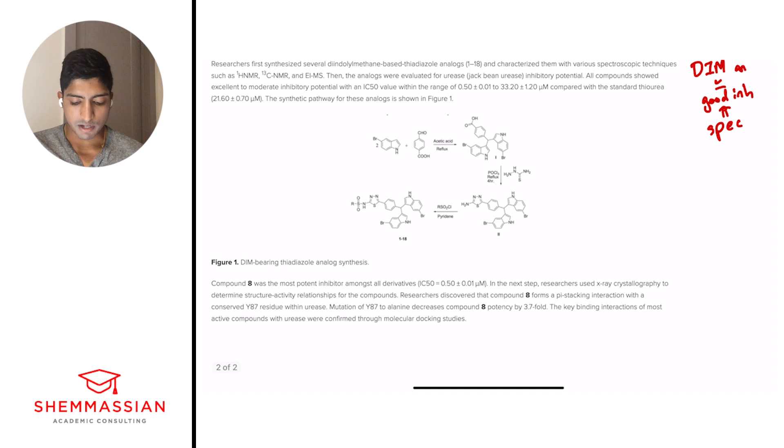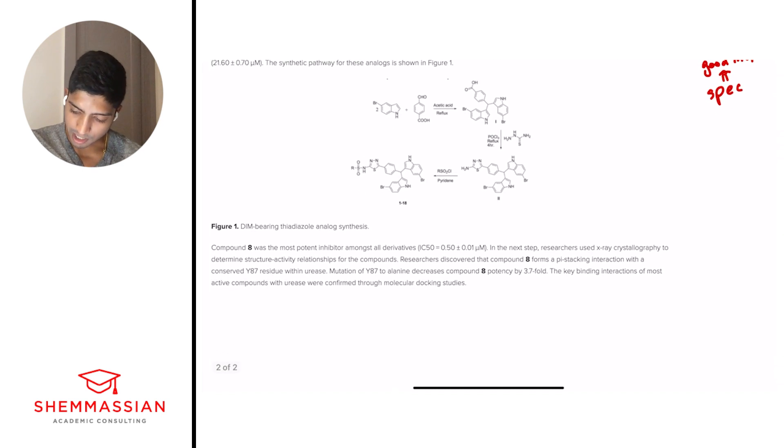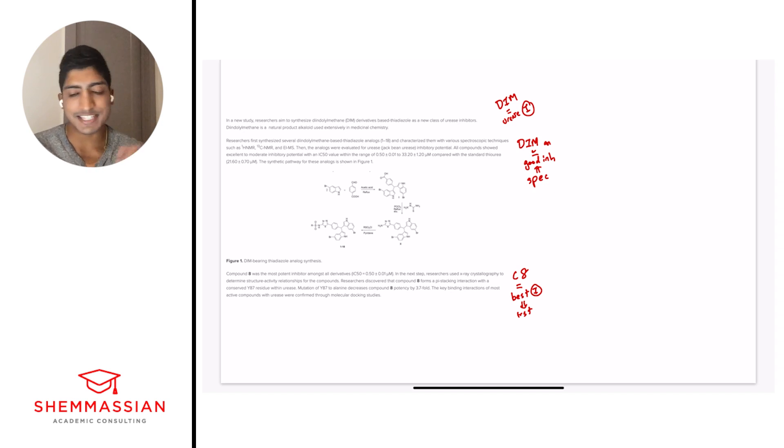Compound 8 was the most potent inhibitor amongst all derivatives. In the next step, researchers used x-ray crystallography to determine structure activity relationships for the compounds. Researchers discovered that compound 8 forms a pi-stacking interaction with a conserved Y87 residue within urease. Mutation of Y87 to alanine decreases compound 8 potency by 3.7 fold. The key binding interactions of most active compounds with urease were confirmed through molecular docking studies. So what is happening? All I'm just going to say is, compound 8 equals best inhibitor. And then we run tests on that. With that, we're ready to go right into questions.